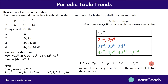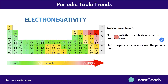Welcome back to Chemistry 3.4. In the second PowerPoint, we're going to start looking at periodic table trends. These periodic table trends relate to electronegativity from level 2. As you may remember, electronegativity is the ability of an atom to attract electrons.